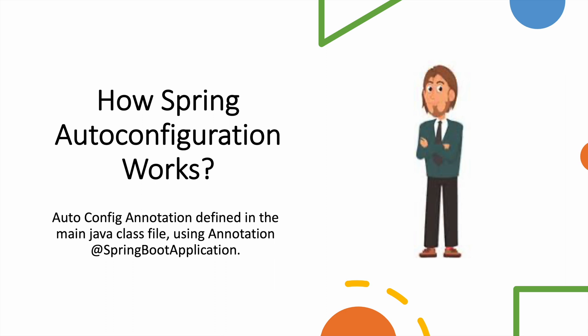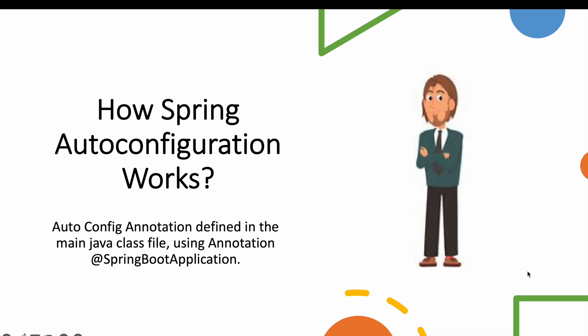Auto-configuration is defined in the main Java class using the @SpringBootApplication annotation. Whenever you create a Spring Boot project — using Spring Initializr, Spring Starter in IntelliJ, or STS — there is a main Java class file annotated with @SpringBootApplication. If you haven't created a Spring Boot project before, I have already shown multiple ways to do that in a previous video.